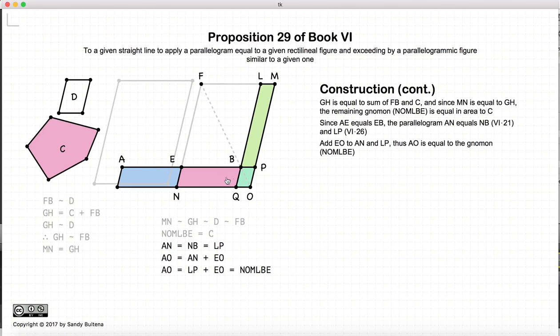Now AO is equal to AN plus EO. AN plus EO equals all of this. If we take AO equals AN plus EO, and AN is equal to LP, substituting LP here in this equation, we have AO equals LP plus EO.